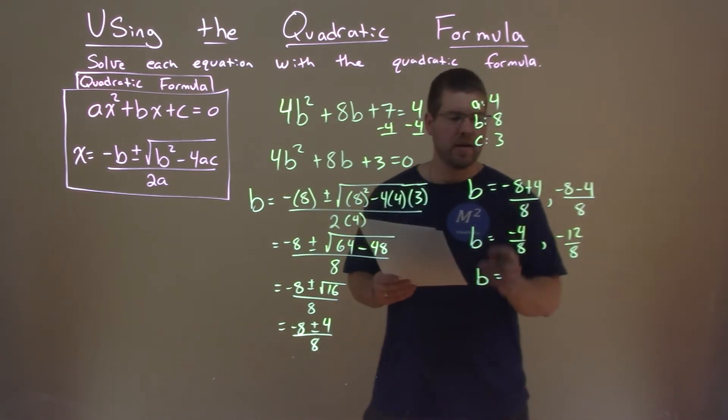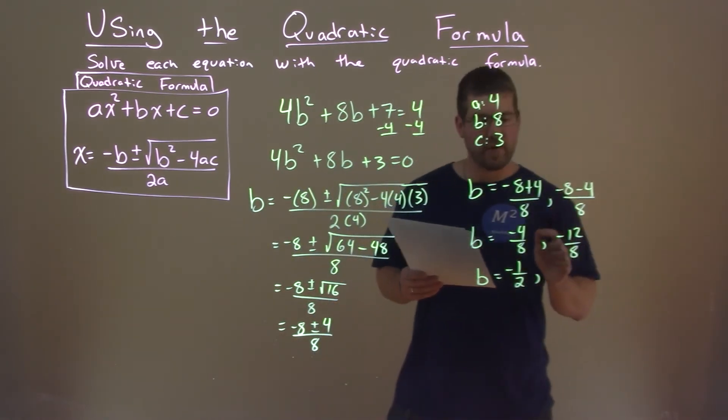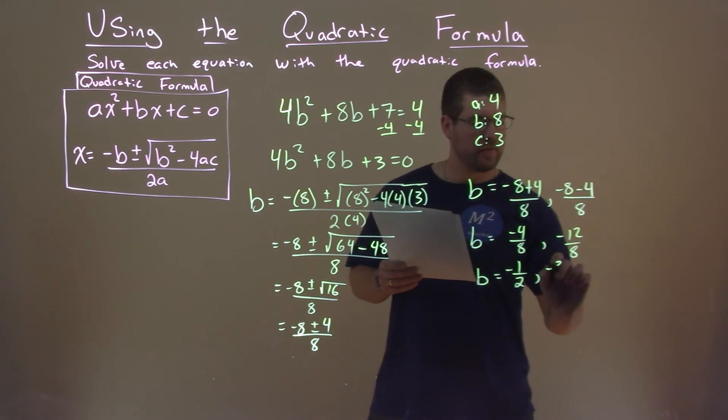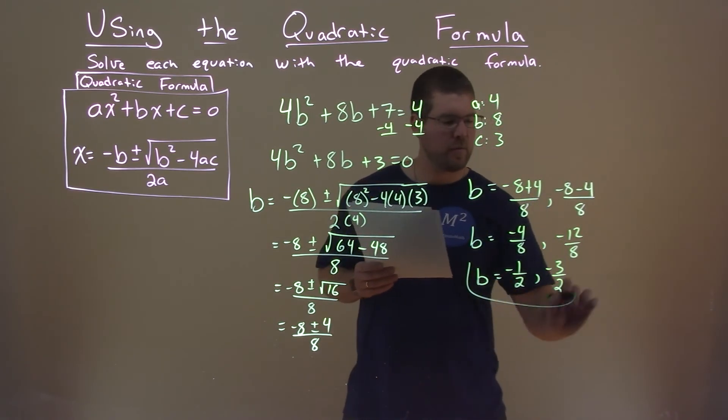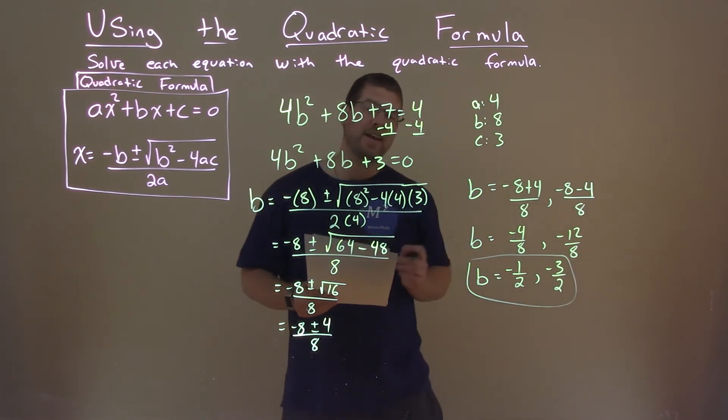Simplifying that, negative 4 divided by 8 is negative 1 half, and negative 12 divided by 8 is negative 3 halves. And so my final answer is b equals negative 1 half and negative 3 halves.